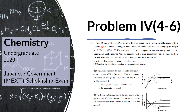Let's just read the problem again. Three moles of nitrogen and nine moles of hydrogen were added into a volume variable reactor with a smooth piston as shown in the figure. The ammonia synthesis reaction proceeded at constant temperature and constant pressure in the presence of a solid catalyst. After the reaction reached an equilibrium state, the mole fraction of ammonia was 50 percent. The volume of the mixed gas was three liters before the reaction. All gases can be regarded as ideal gases.